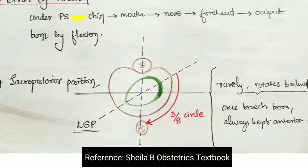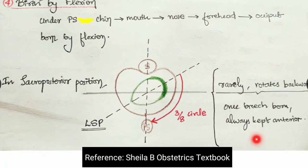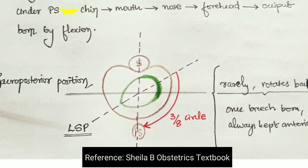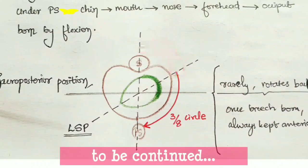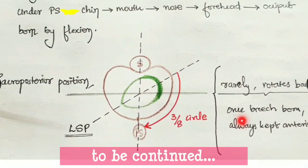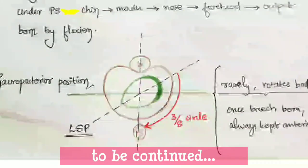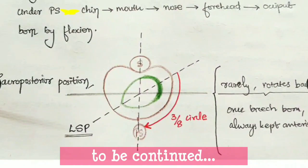Rarely, in sacro-posterior position, the head rotates backwards. We should not allow it to rotate backwards. Once the breech is born, always keep it anteriorly.